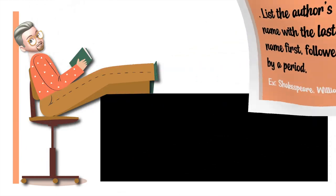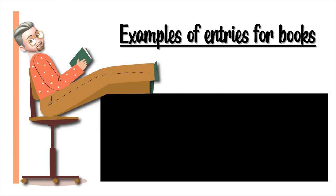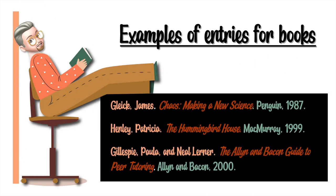So let's take a look at some examples now. Glick, James. Chaos: Making a New Science. Penguin, 1987. Henley, Patricia. The Hummingbird House. McMurray, 1999. Gillispy, Paula and Neil Lerner. The Allen and Bacon Guide to Peer Tutoring. Allen and Bacon, 2000.